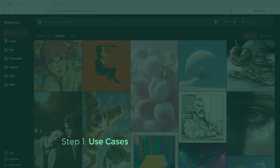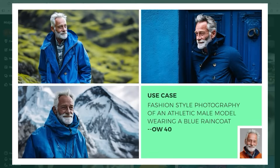The text in each example is kept short, focusing on key aspects like the type of image — whether it's a photo, a studio shot, or an illustration — as well as the clothing, the environment, and the lighting. In the bottom right corner, you'll always see the reference image I used for Omni Reference. For these examples, I used this older man with a white beard. You'll see him styled in fashion photography, with a blue raincoat set in Iceland, Ireland, and the Himalayas. The Omni Weight varies in these examples between 40 and 200, depending on the look I wanted. You can adjust this freely, and I'll explain more about Omni Weight later.